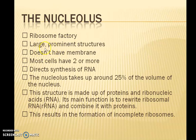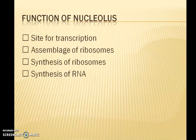The nucleolus is a large, prominent structure but does not have a membrane. Most cells have two or more nucleoli. Within this region, rRNAs — ribosomal RNAs — are synthesized. The nucleolus takes up around 25% of the nuclear volume and is made up of protein and nucleic acid. Its functions include: site for transcription, assembly of ribosomes, synthesis of ribosomes, and synthesis of RNAs.